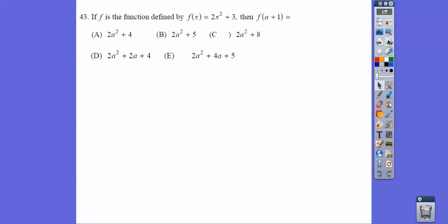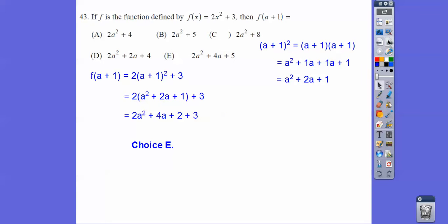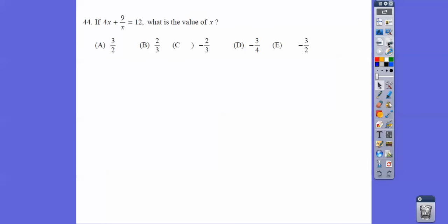If F is the function defined by that, then what is F of A plus 1? You just got to remember A plus 1 squared is A plus 1 times A plus 1, and then foil that out, we get that. Then distribute the 2 through 2A squared plus 4A plus 2, and then plus 3, so we get choice E.